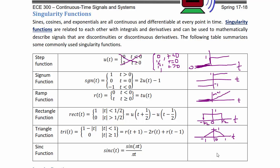The sinc function is defined as sin(πt) / (πt). It is actually continuous and differentiable, but is included in this section for reference. It has a peak of 1 at the origin and dies off with zero crossings at every nonzero integer: 1, 2, 3, 4, … and −1, −2, and so on.